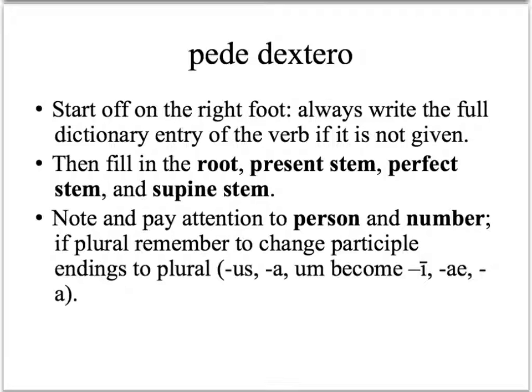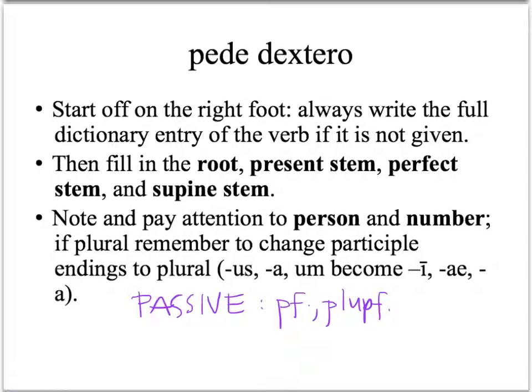Pay attention to the person and number. Key: if the number is plural, be sure to change the participle endings to the plural. These occur in the passive column below the dotted line — that is to say, for the perfect, the pluperfect, and the future perfect.